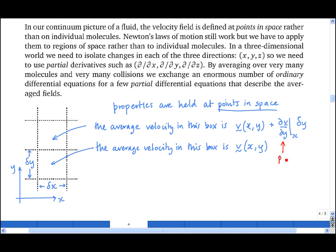The key point is that because properties are held at points in space, we need to distinguish between how they vary in one direction in space from how they vary in another direction in space. And so we use the language of partial derivatives.